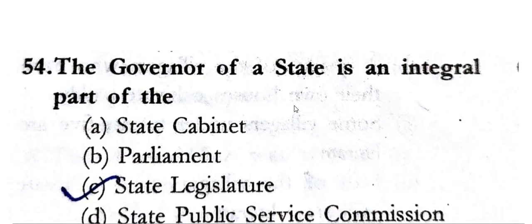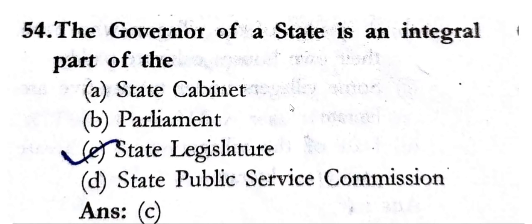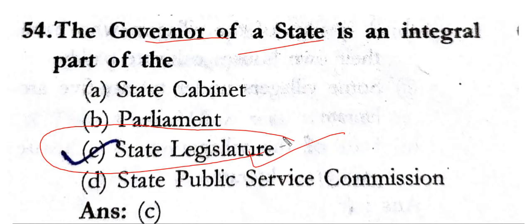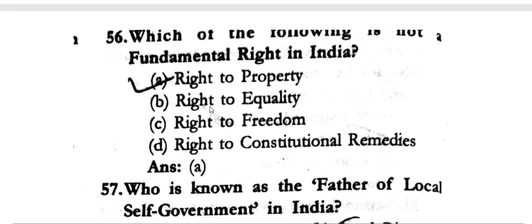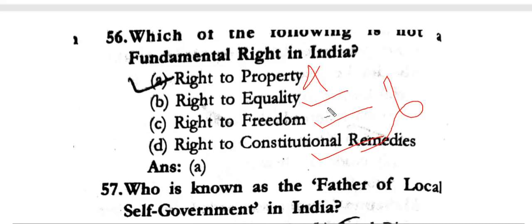The Governor of a state is an integral part of the state legislature — the Governor is part of the legislature. Which of the following is not a fundamental right in India? The Right to Property is not a fundamental right. Right to Equality, Right to Freedom, and Right to Constitutional Remedies are fundamental rights.